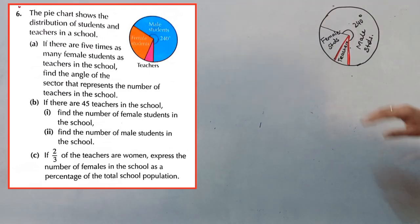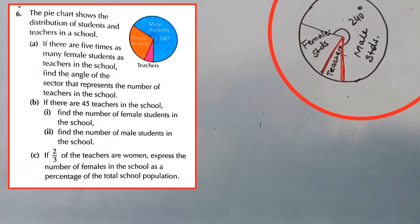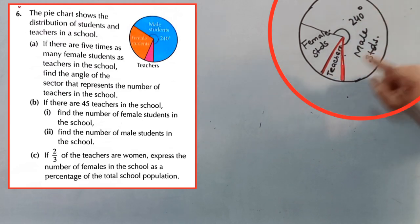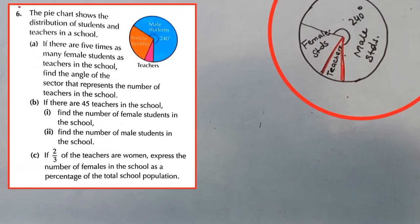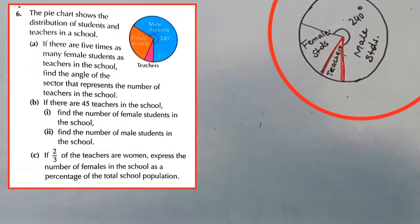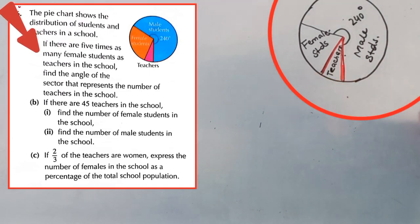In question number six, a pie chart is given. The angle of sector for male students is given as 240 degrees. The angle of sector for female students and teachers is not given. In the first part, if there are five times as many female students as teachers in the school, find the angle of the sector that represents the number of teachers.